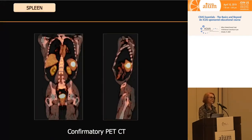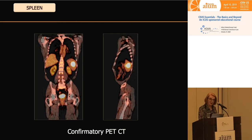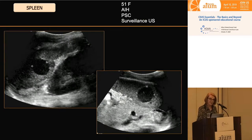They did one other test before the biopsy — a PET-CT. There are no other foci of hypermetabolism in the body, but the lesion we saw in the spleen and predicted to be malignant, which turned out to be B-cell lymphoma, is in fact hypermetabolic on PET.